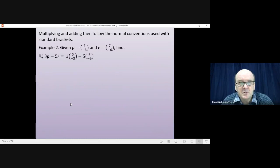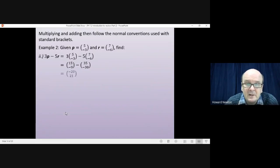And part 2, 3p minus 5r. Well, 3p we just do 3 times by the vector p, and 5r we just do 5 times the vector r. So that would give us 15 minus 9 when we do 3p, and 35 minus 30 when we do 5r. And then carrying out the subtraction, 15 take away 35, minus 20. Minus 9 minus minus 30 is minus 9 plus 30, which is 21.